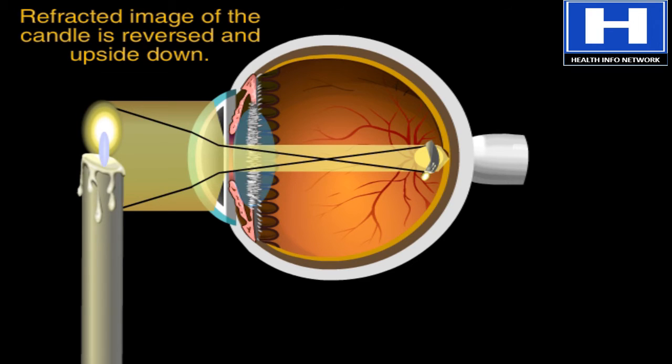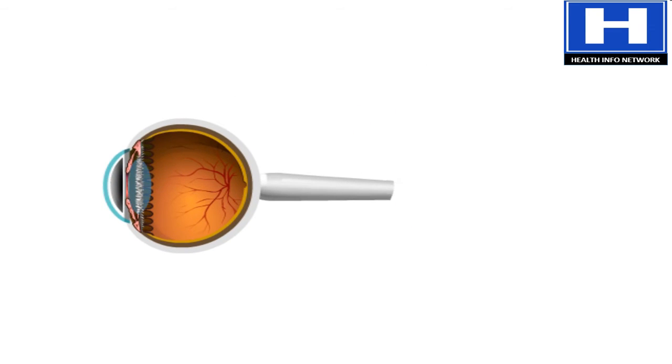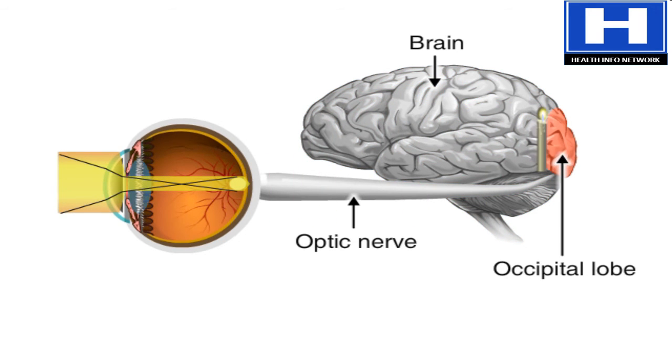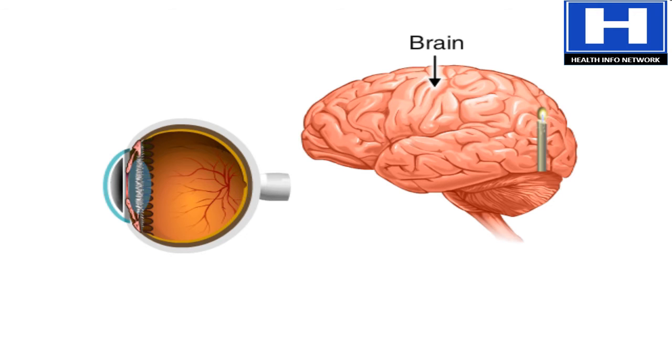If that was the end of the story, the world would always appear upside down. Fortunately, the image is turned right-side up in the brain. Before that can happen, the image needs to travel as impulses along the optic nerve and enter the brain's occipital lobe. When the image forms there, it regains its proper perspective.